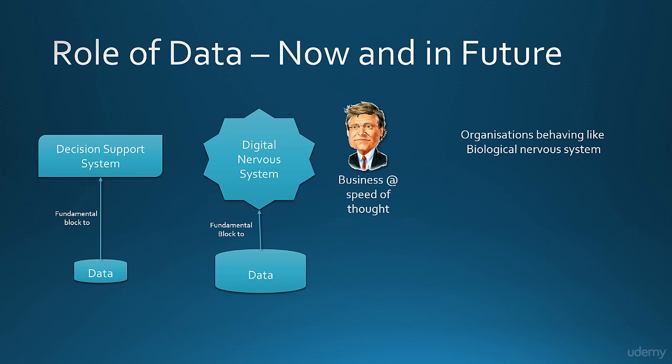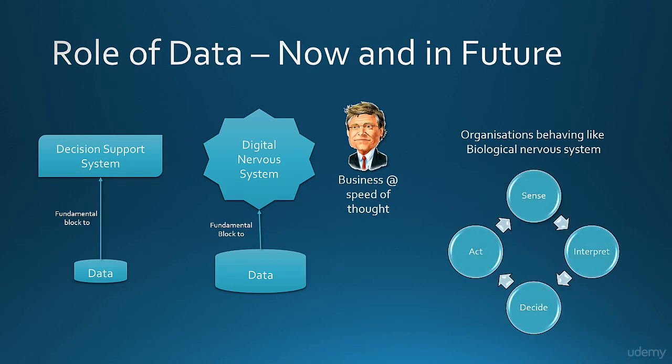What it refers to is that organizations would start to act like a biological nervous system. If we simplify the biological nervous system, it follows the following cycle: it senses, interprets, decides, and acts. It senses information from five sense organs, then interprets the sensation by referring to historical data, decides what actions would be favorable to the situation, and then acts on the decision. Similarly, this behavior can be replicated in an organization with data acting as the foundation of such a digital nervous system.